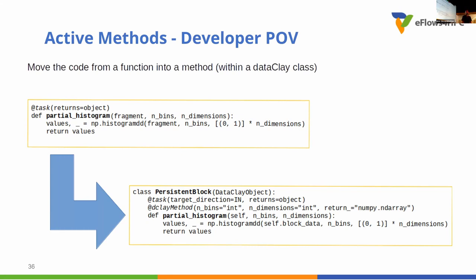So what does the active methods mean from the point of view of the developer? When we talk about active methods, we are simply moving the function that you will have in your code. For example, this is a partial histogram, just a bit of code that will have its task decorator, and so on. You put that code in a class that has all the definitions that you need. In this case, you have the persistent block object that will be a DataClay object. You still have the task decorator, and there is an extra decorator that is the DataClay method decorator that annotates the fact that this object can be executed remotely in an active fashion.